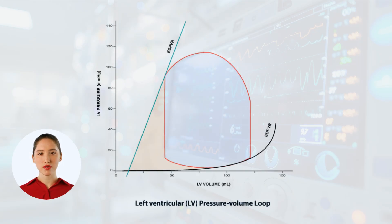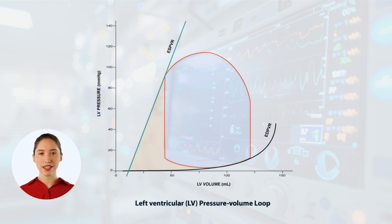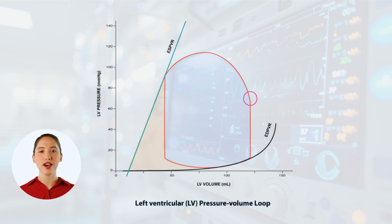Next we'll draw the loop itself. During diastole, the heart fills with blood, increasing volume. Then it contracts, increasing pressure during the isovolumic contraction phase, before the aortic valve opens and the blood is ejected into the aorta.